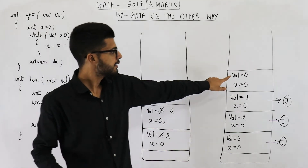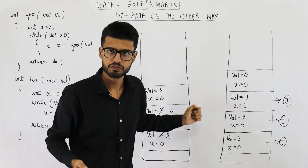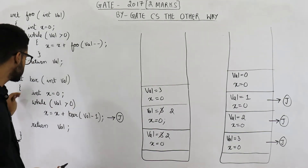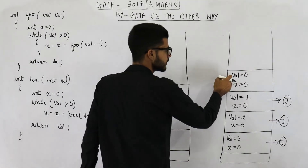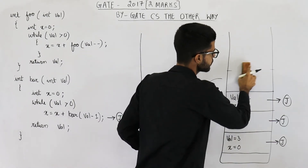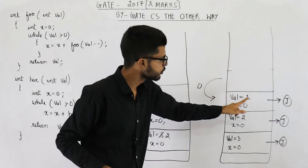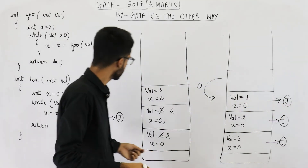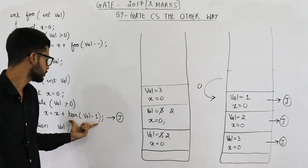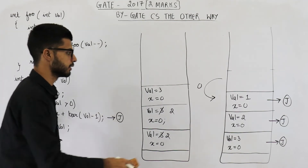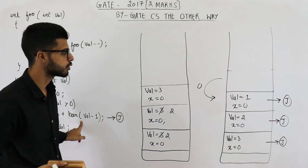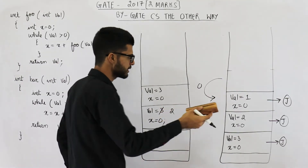Inside the function with val equal to 0, we execute it from line 1: int x equal to 0 is done. While val is greater than 0 — this is false. That means we come out of this loop and return val, which is 0. This function returns a value 0. Because this function is returning, we pop its activation record, and 0 is used inside the calling function at line number j. In that function you made the call, and whatever was returned was 0. So x is updated with current value 0 plus 0 returned, which means x remains zero — unaffected.